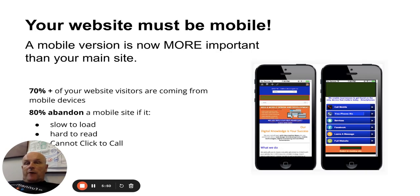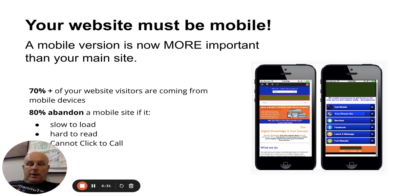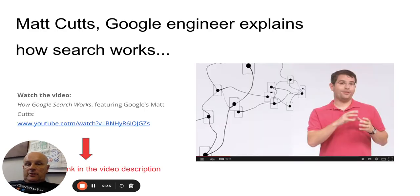70% of searches are now done on mobile devices, so it's absolutely imperative to optimize for mobile. We're actually building separate websites for mobile devices — a slimmed-down version of the main website containing the core information people need: making a phone call, getting directions, seeing services, reading reviews, leaving a message, or going to the full website. Just quick easy buttons with larger text.